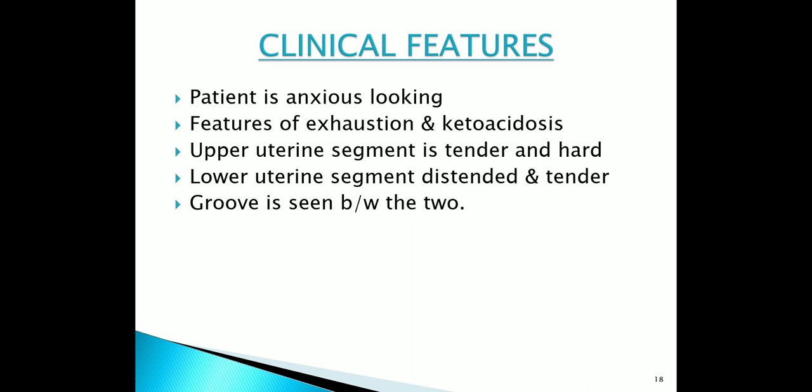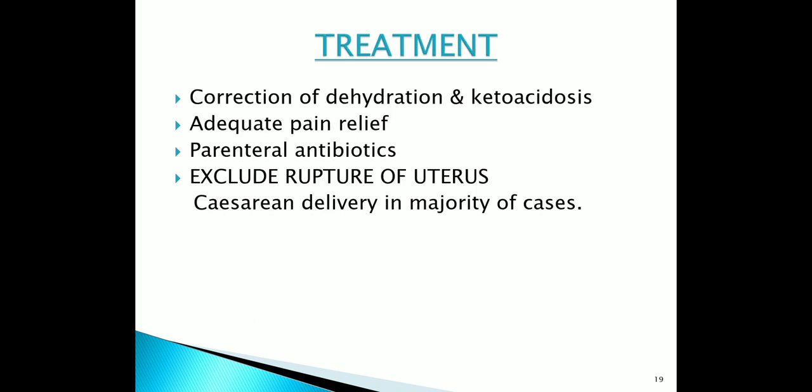Clinical features: the patient is in agony from continuous pain and discomfort and becomes restless. Features of exhaustion and ketoacidosis are evident. Abdominal palpation reveals the upper segment is hard and tender, lower segment distended and tender, with a groove in between the two. Treatment: correction of dehydration and ketoacidosis, adequate pain relief, parenteral antibiotics, exclude rupture of uterus, and caesarean delivery in the majority of cases.